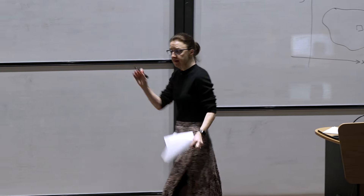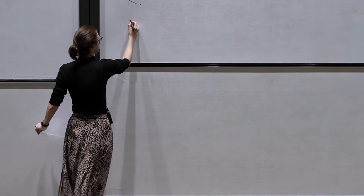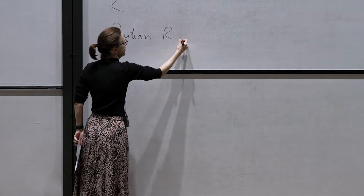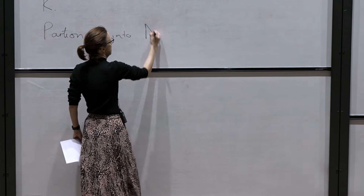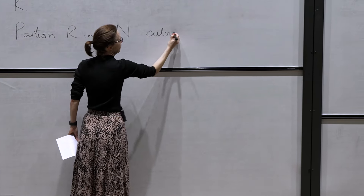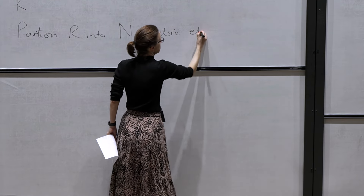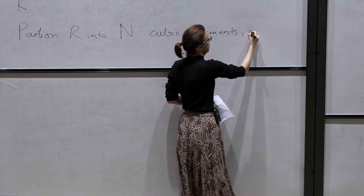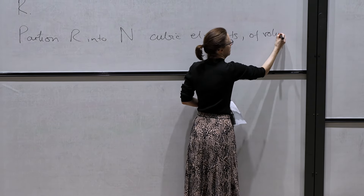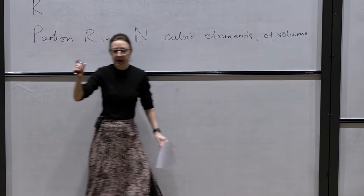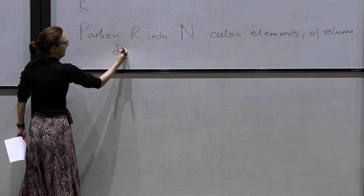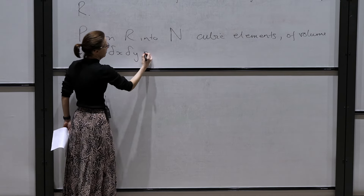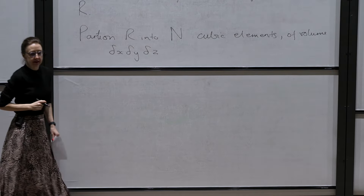As we did for single integrals and double integrals, what we do now is we partition R — the region that we're integrating over — into n cubic or cuboid elements. We suppose these have volume delta x times delta y times delta z. So if delta x is a little increment in x, delta y is a little increment in y, and so on, then the volume element is delta x, delta y, delta z.